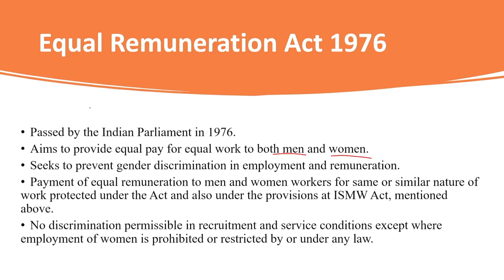It was during 1975, the International Year of Women, that India promulgated the Equal Remuneration Ordinance. This was to give effect to Article 39 of the Constitution of India, which directed equal pay — a significant keyword which came into prominence in 1975: equal pay for equal work for both men and women. The ordinance was replaced in 1976 by the Equal Remuneration Act 1976, providing equal remuneration to both men and women irrespective of gender for the same or similar nature of work, consistent with ILO Convention 100.